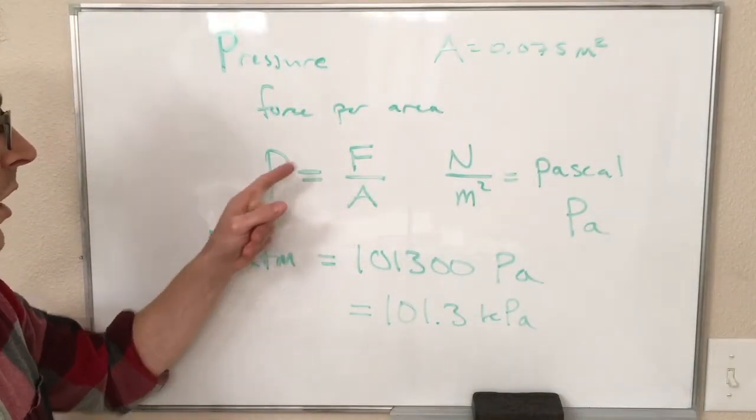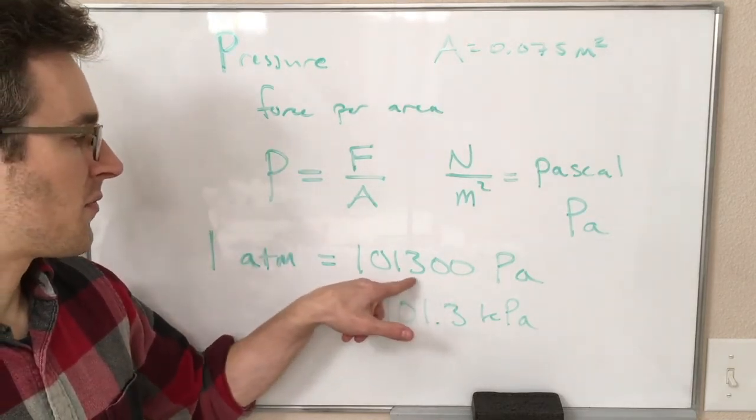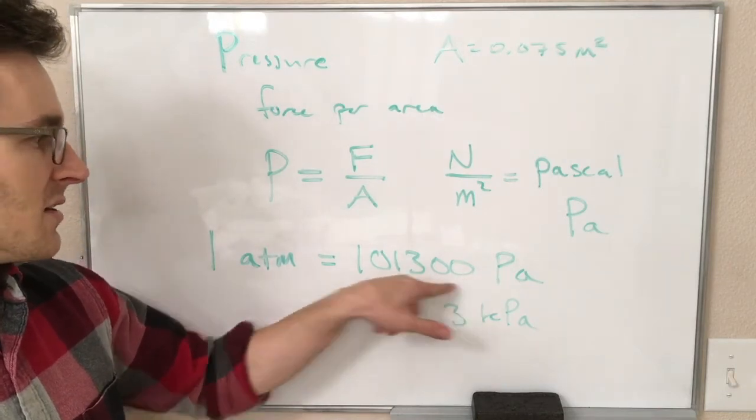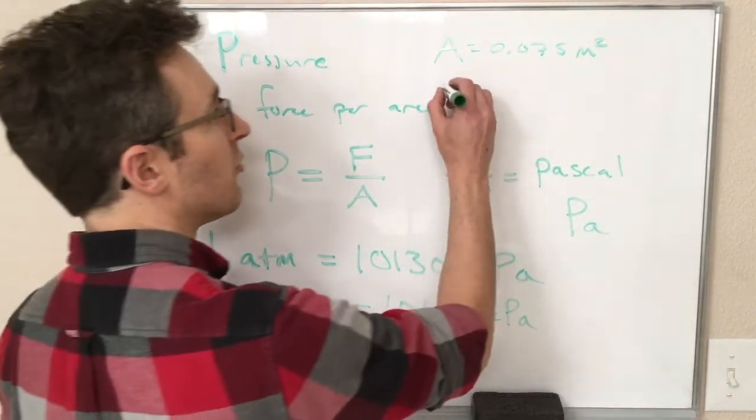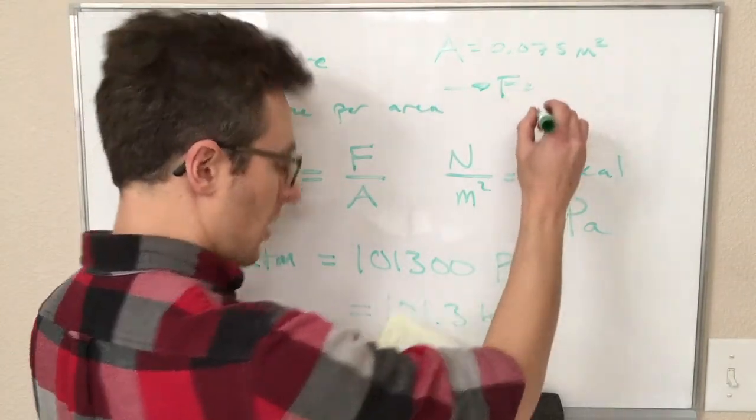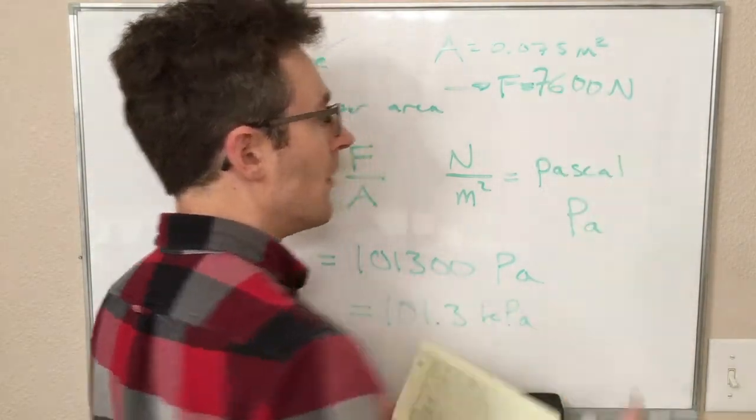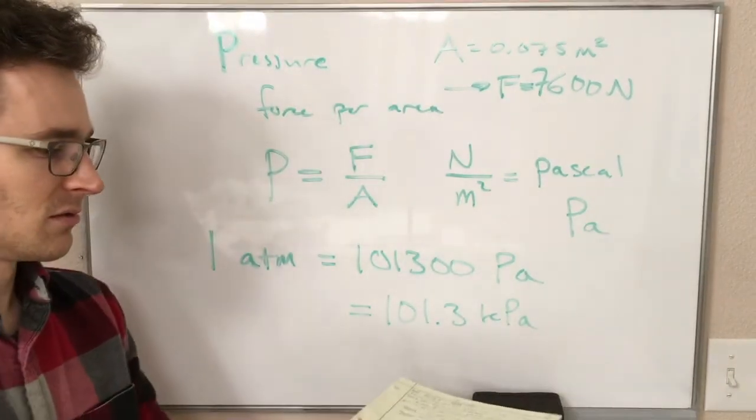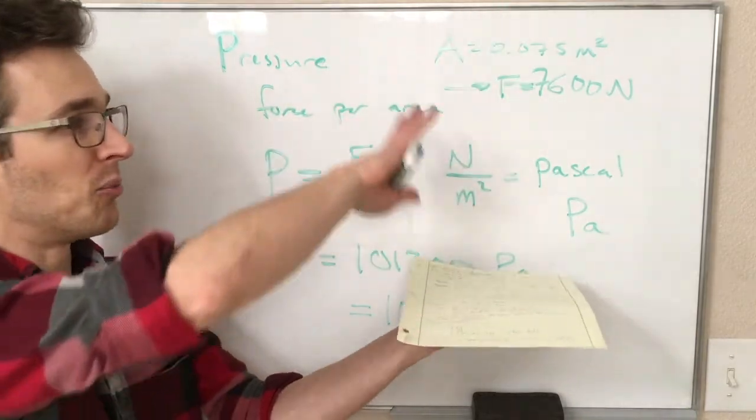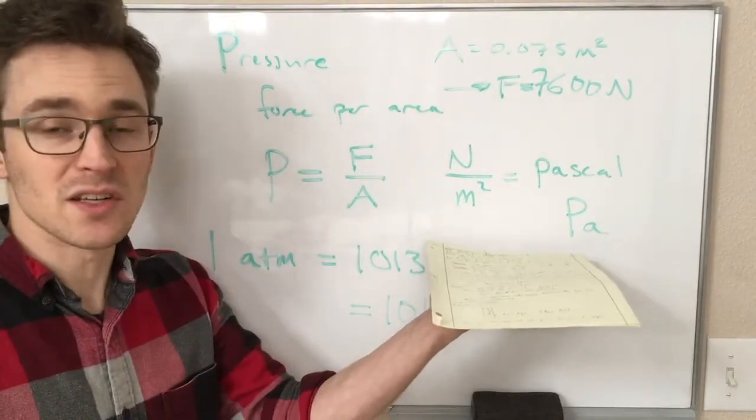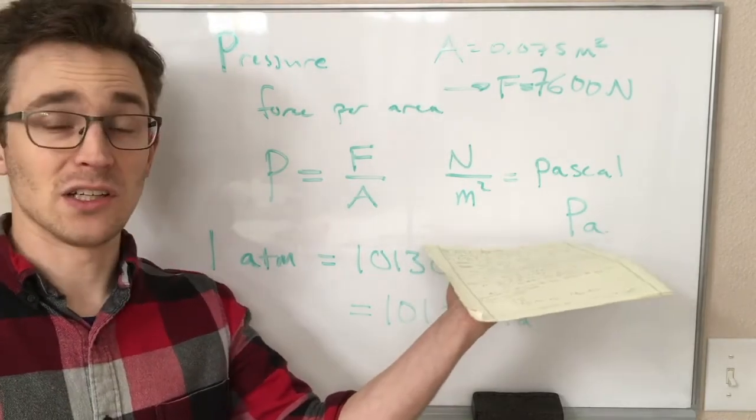And if we calculate how much force this is feeling, so if we solve this for F, F is equal to the pressure times the area, right? So 101,300 pascals, that is that many newtons per square meter, times this many square meters, gives us a force of 7,600 newtons on this piece of paper. So if I'm holding my notes like this, they are feeling a force downward from the air above them of 7,600 newtons.